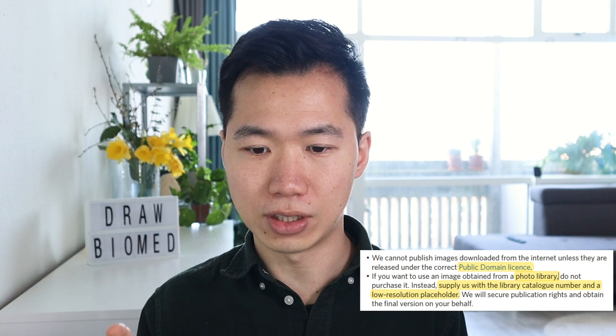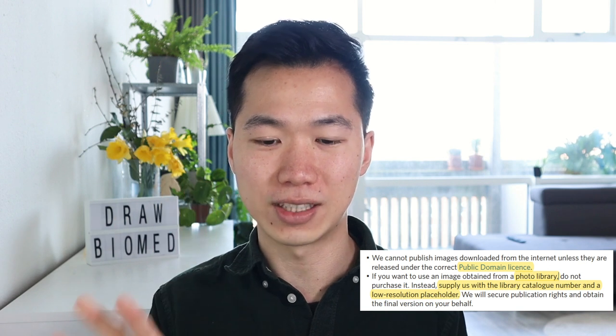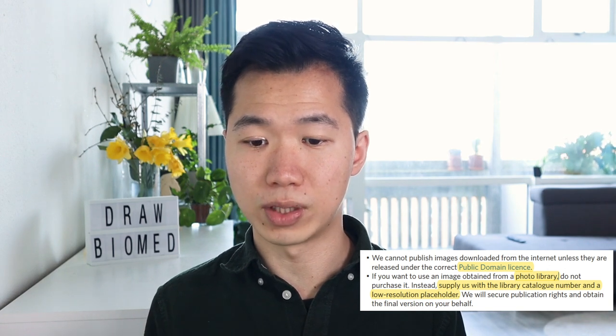For example, with Getty Images and Shutterstock: if you want to use their content in your publication, you can just download the low-resolution preview with the watermark. As the guideline says, it is totally fine to put it as a placeholder and provide the catalog number. Once your manuscript is in the reviewing and publication process, they will go and obtain those publication rights for you. This is a very handy service — make sure you follow this if you use any stock images.